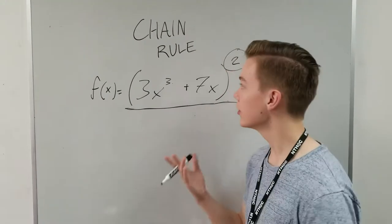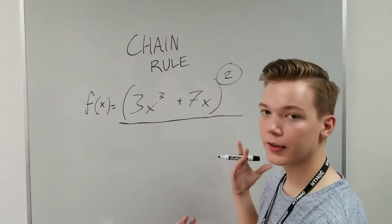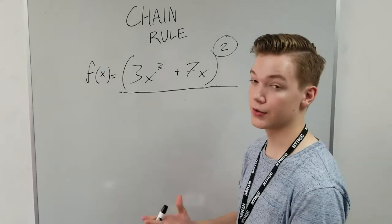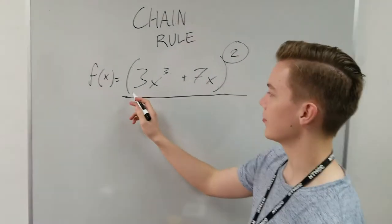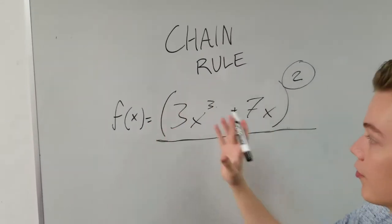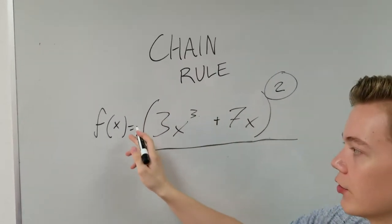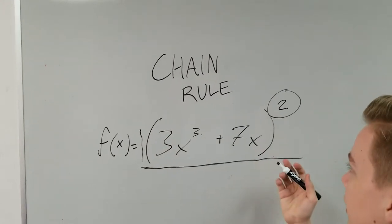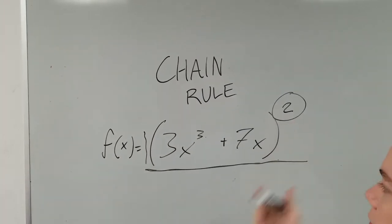Welcome to the chain rule. This is basically a way of finding the derivative when you have two functions in one. The first function is inside the parentheses here, and the second function is whatever's outside of the parentheses. In this case, you can think of it as just like a 1 right here on the outside, and then an exponent of 2.